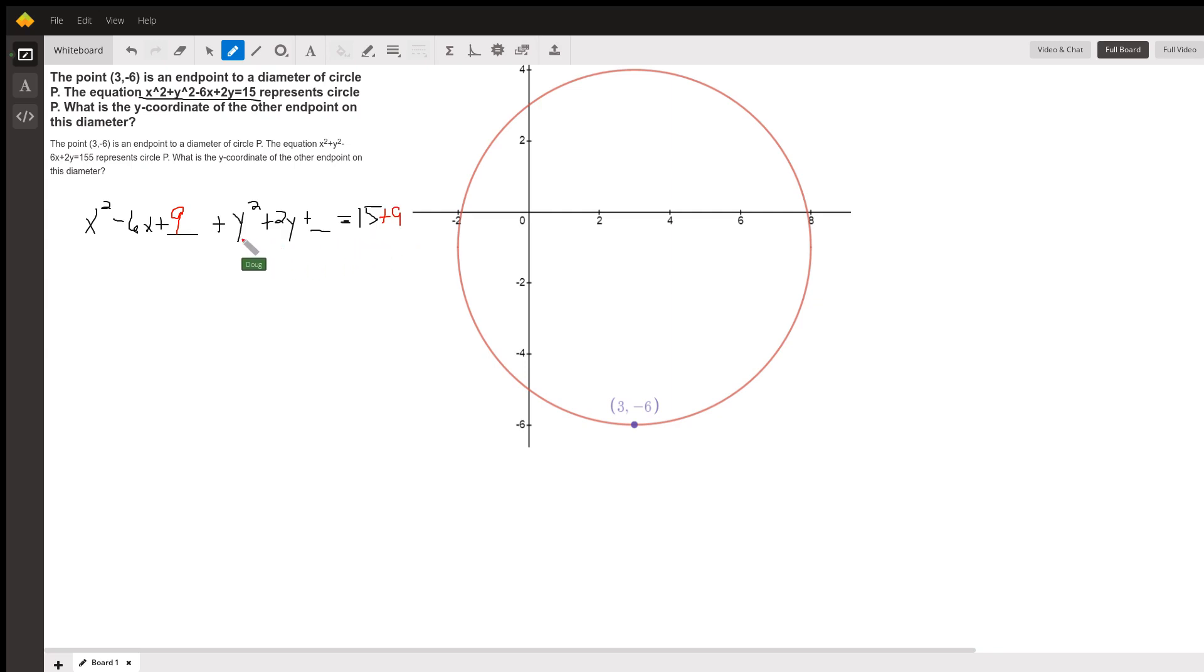And similarly, for the y-coordinate, half of this 2 is 1. 1 squared is 1. We've got to add a 1 here.